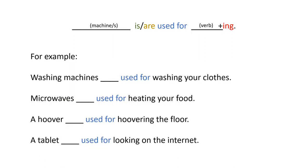So, our formula here is, first we say the machine, and then is or are, used for, and finally the verb with ing.